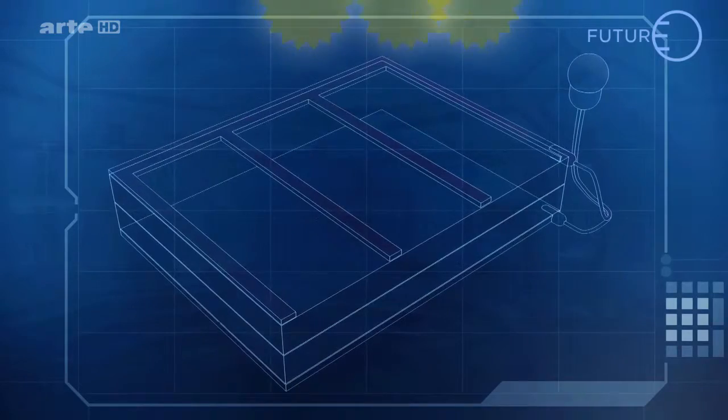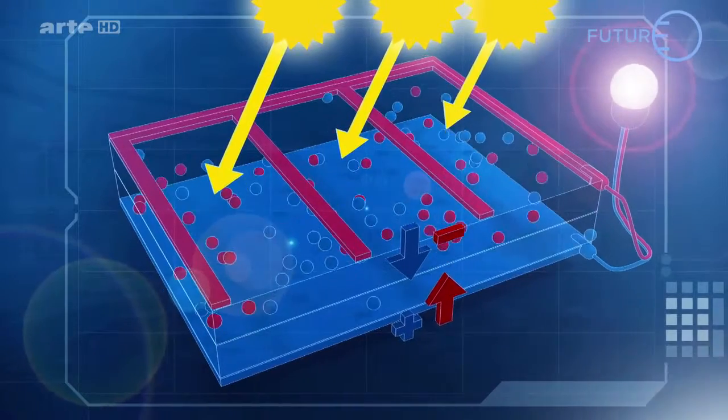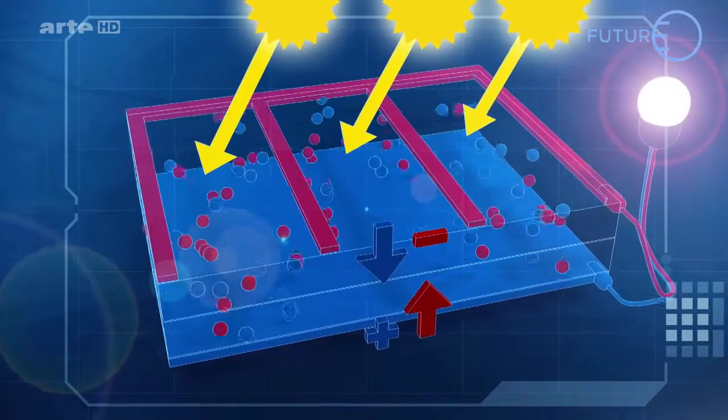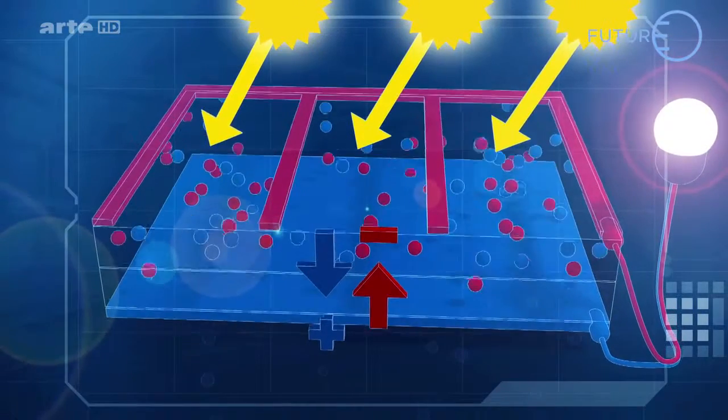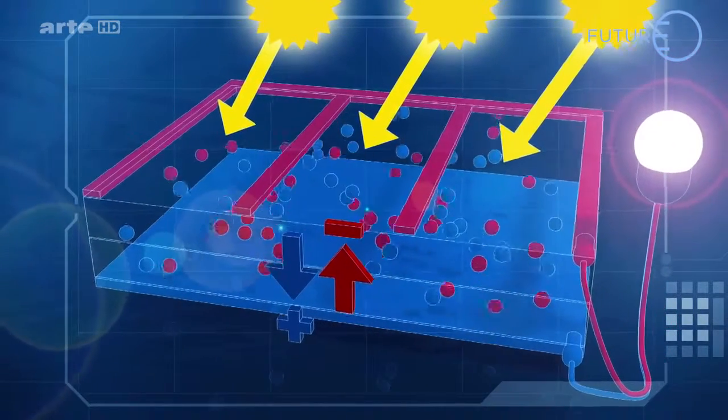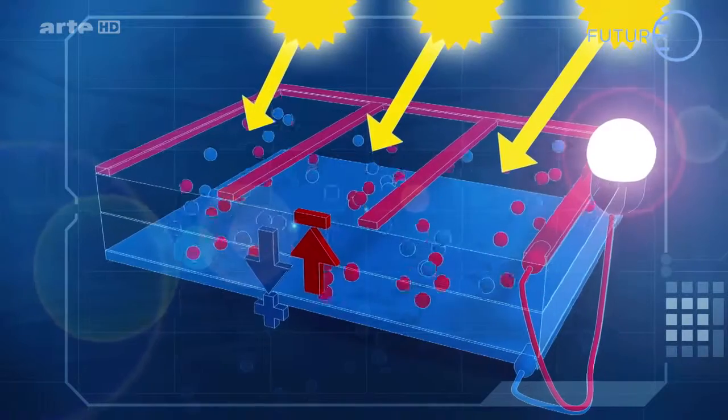Les cellules solaires absorbent la lumière du soleil, qui est constituée de photons. Chaque photon crée un électron excité. Ces électrons, grâce à la conception de la cellule photovoltaïque, sont guidés, puis récupérés par les électrodes de la cellule. Ensuite, ce courant électrique peut être utilisé par toutes sortes d'appareils.